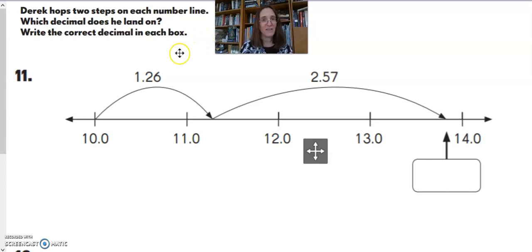In this case, we have a puzzle that involves a number line. So the directions say that Derek hops two steps on each number line. Which decimal does he land on?